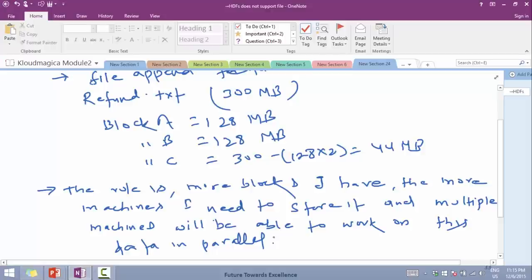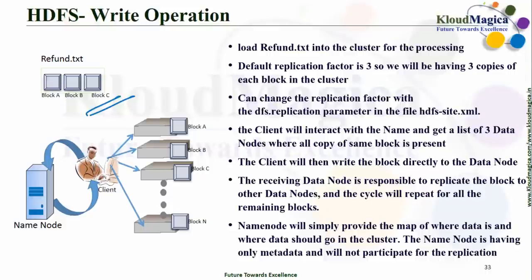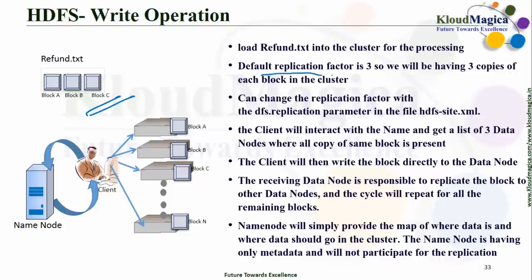We know Hadoop works on commodity hardware, so any slave node can fail at any moment of time. We have to ensure that every data block is available on multiple machines at once to avoid data loss. So each block will be replicated when it is loaded into the cluster. The default replication factor is three, so we will be having three copies of each block in the cluster.